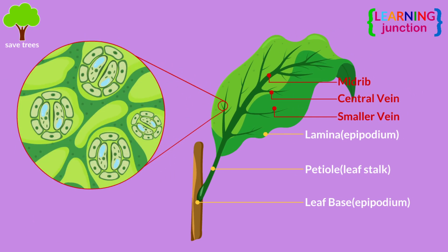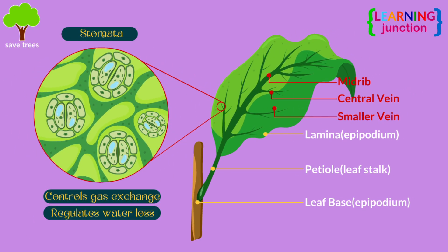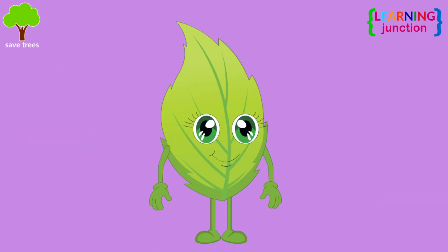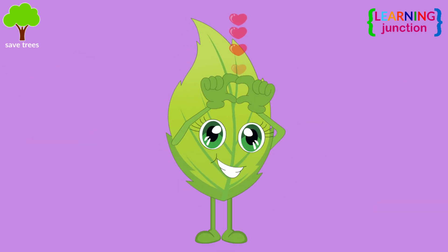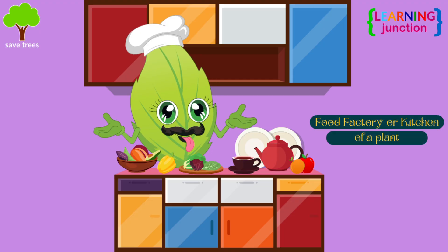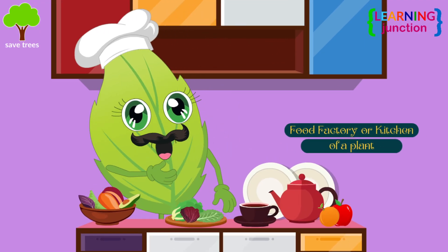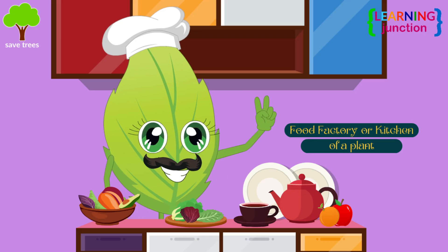These pores are the stomata that control gas exchange and regulate water loss by opening and closing. A leaf is often called the food factory or kitchen of a plant. It simply means food for the plant is prepared in the leaves.